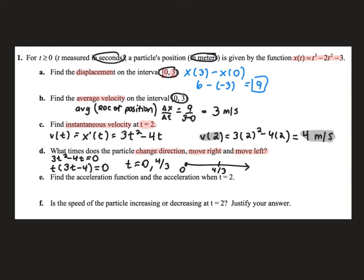My time interval begins at t equals 0, so I show that on my sign chart. I have two intervals to check. Between 0 and 4/3, I pick a number like 1 and put it into my factored form of the velocity. When I put 1 in here it's positive, and in the other factor it's negative — a positive times a negative gives negative, so we're negative on that interval. I pick a number greater than 4/3, like 100, and I get a positive. So at 4/3 my velocity changes from negative to positive, and my particle moves right from 4/3 onward and moves left from 0 to 4/3.